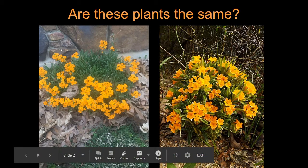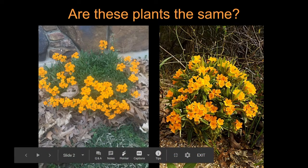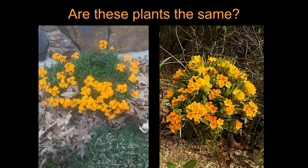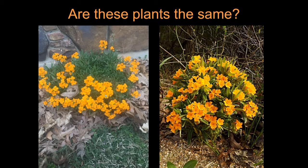Now if we look over here at this other plant, how many petals do we have? One, two, three, four, five. Let's count another one — one, two, three, four, five. And again: one, two, three, four, five. So we've got five petals over here. Notice this one has a deep, dark yellow center that almost looks like it has a hole, whereas over here there's a green dot in the center. That's telling you the reproductive structures are different.